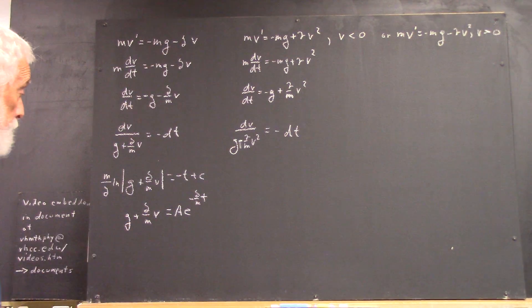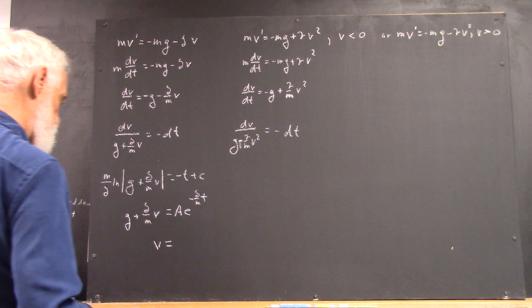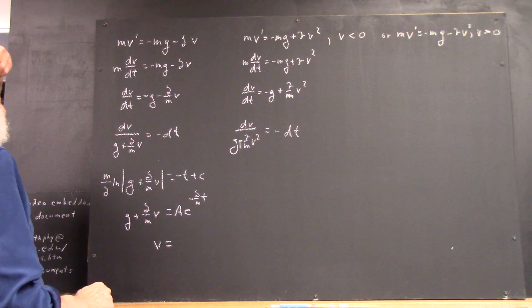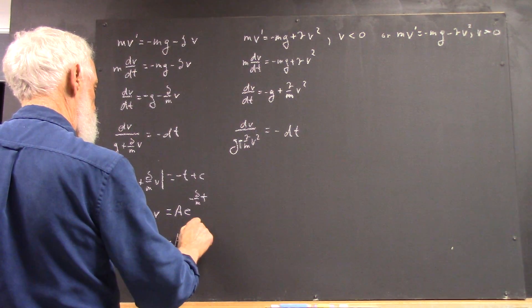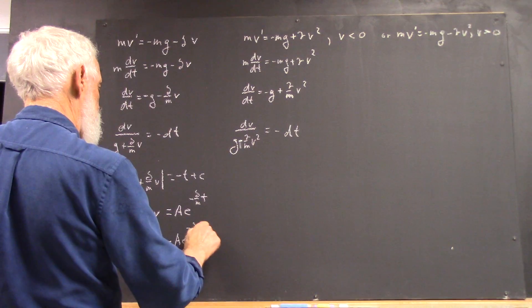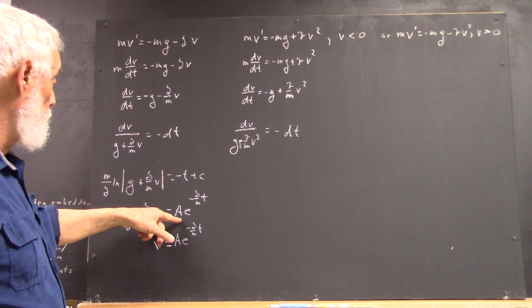And then you solve for V, and you get V equals still AE to the negative delta over MT, because you're going to multiply by M over delta, and the A will absorb that.